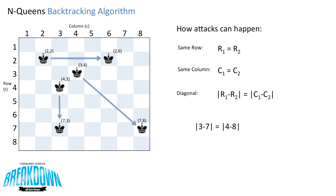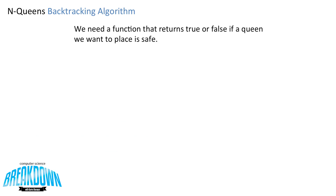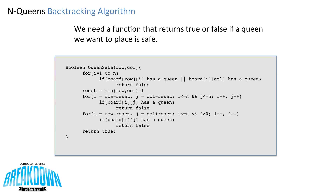In this case, |3 - 7| equals |4 - 8|, so 4 equals 4 — therefore they share a diagonal. So we need a function that returns true or false if a Queen we want to place is safe. I've come up with this Boolean function that takes in the row and column of the Queen that you want to place and returns either true if it's safe or false if it's not.